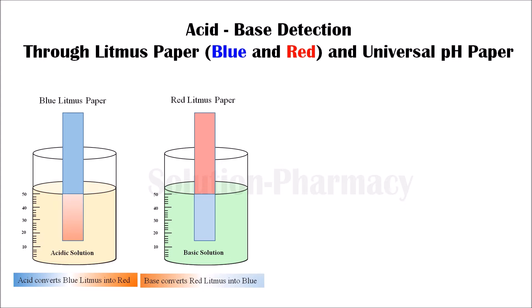So by this experiment we conclude that acidic solution converts blue litmus paper to red, and basic solution converts red litmus to blue. However, by this experiment we can only know whether our solution is acidic or basic in nature, but not how much acidic or basic it is.